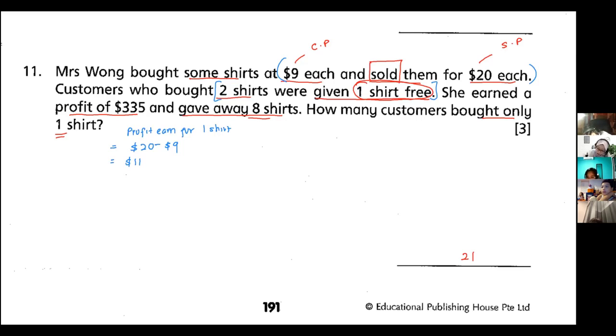If a customer bought two t-shirts, two shirts means she earns a profit. Profit for two shirts means $11 times two. So it is $22.